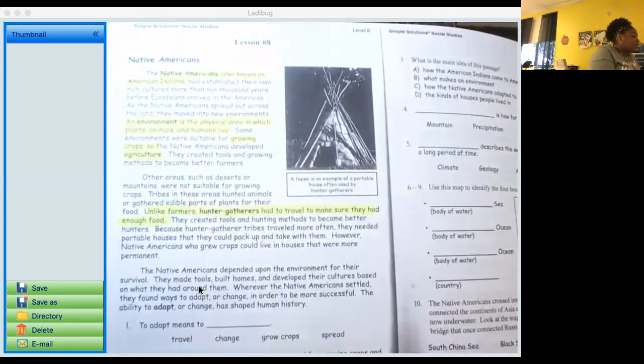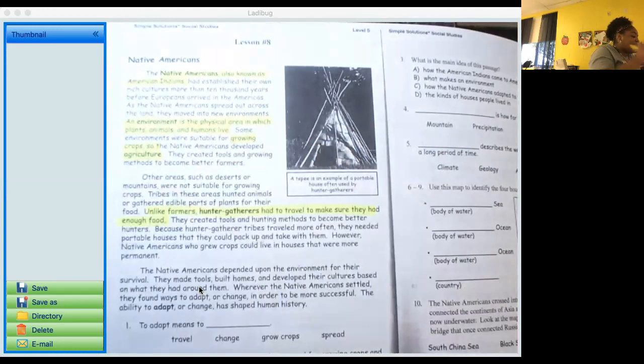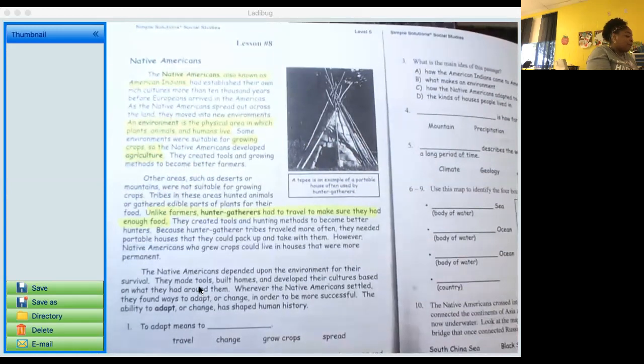They created tools and hunting methods to become better hunters. Because hunter-gatherer tribes traveled more often, they needed portable houses that they could pack up and take with them. However, Native Americans who grew crops could live in houses that were more permanent. The Native Americans depended upon the environment for their survival. They made tools, built homes, and developed their cultures based on what they had around them. Wherever the Native Americans settled, they found ways to adapt or change in order to be more successful. The ability to adapt or change has shaped human history.